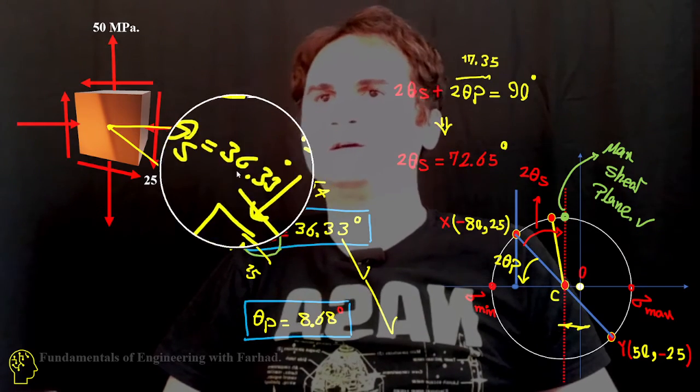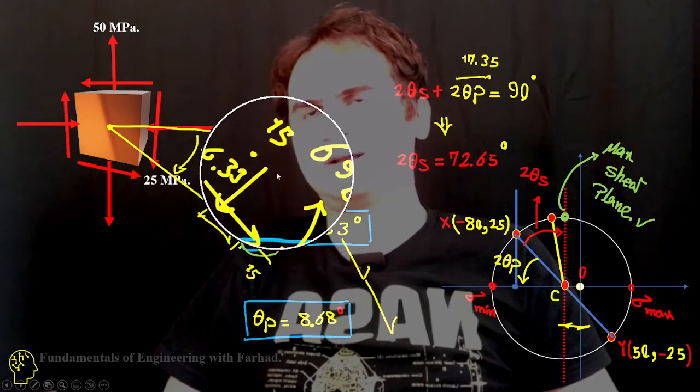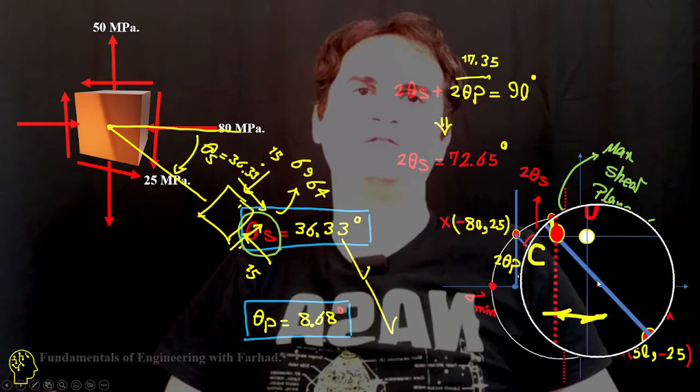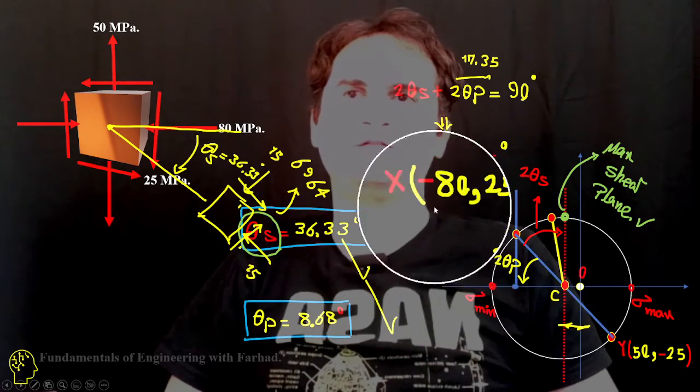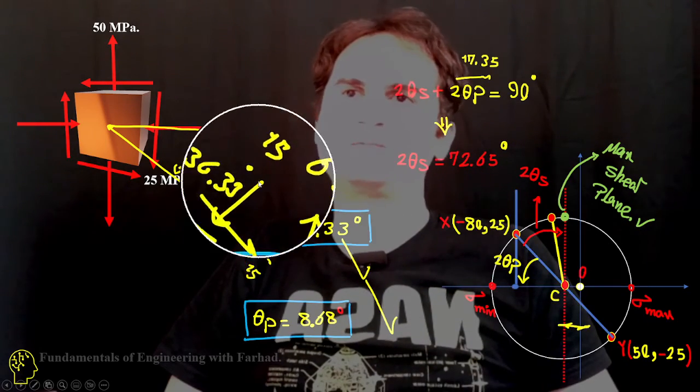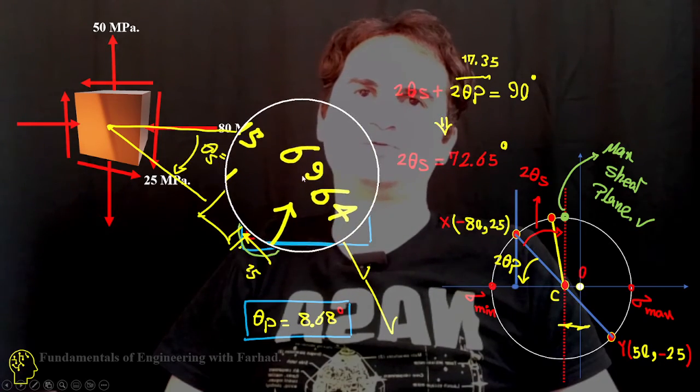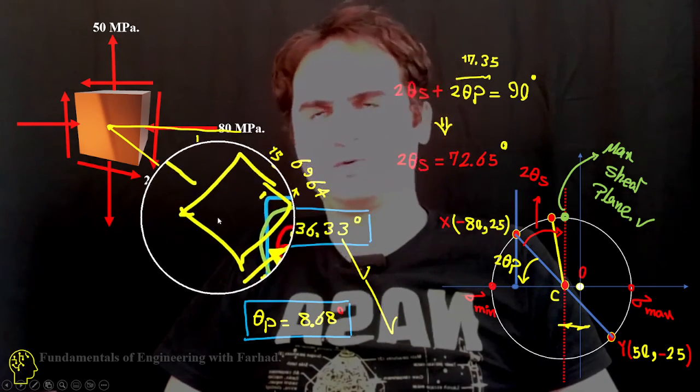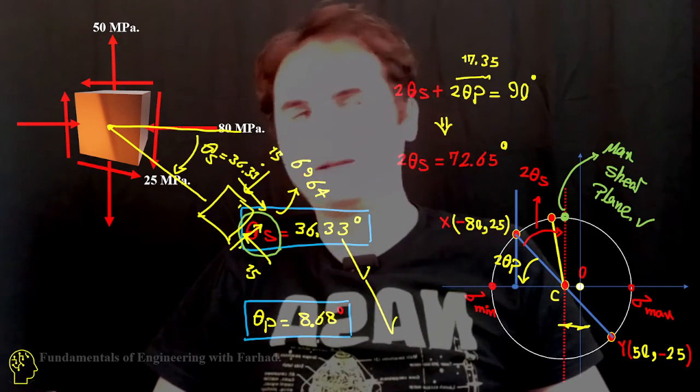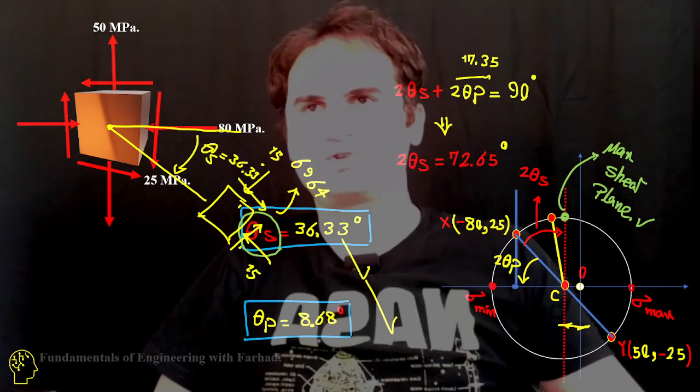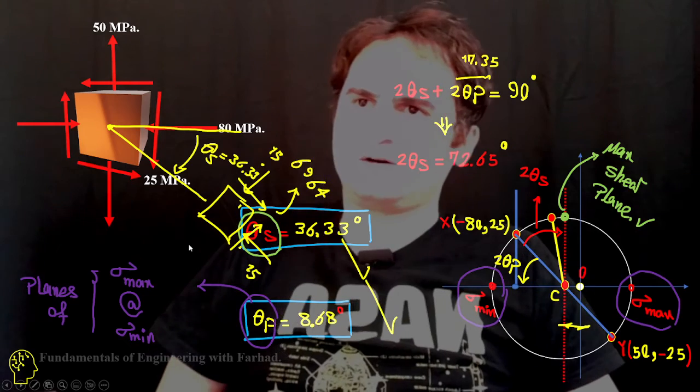If you know what our theta s and theta p are, you can easily show them. The point is in the plane of theta s, you can see there is a distance from origin to center that gives us negative 15, which is sigma average, and the maximum shear which is equal to r, the radius of our Mohr circle. But in theta p, you have no shear.